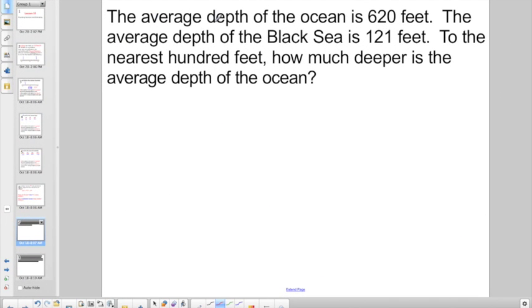Check out this guy. The average depth of the ocean is 620 feet. Do you all have that picture in your mind? The depth, how deep it is. The average depth of the Black Sea is 121 feet. To the nearest 100 feet, how much deeper is the average depth of the ocean? They want to know how much deeper. Well, let's do some rounding here. 620, I'd say that's about 600 because the neighbor to the right is only a 2, right? And 121, the neighbor to the right there is less than 5. So he's going to round to 100. So this guy is 600, this guy rounds to 100.